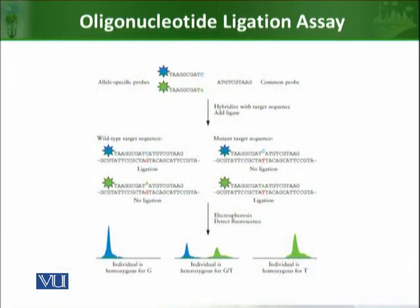In this figure you can see there are a total of three probes. On the left side, these two are allele specific probes, and on the right side is the common probe. In the first step, the target sequence is PCR amplified.